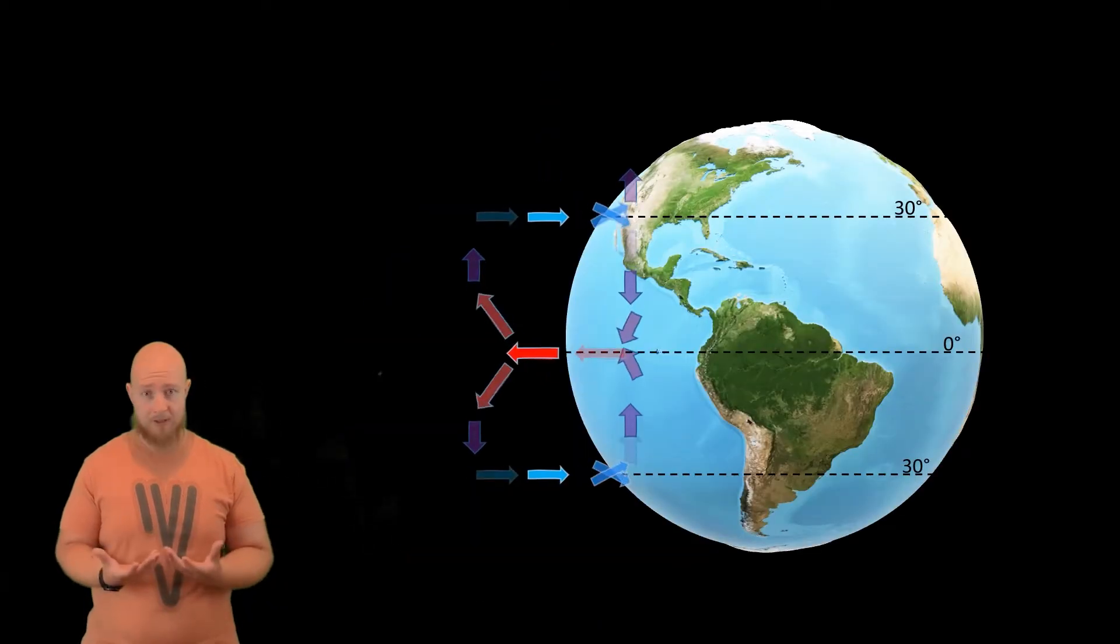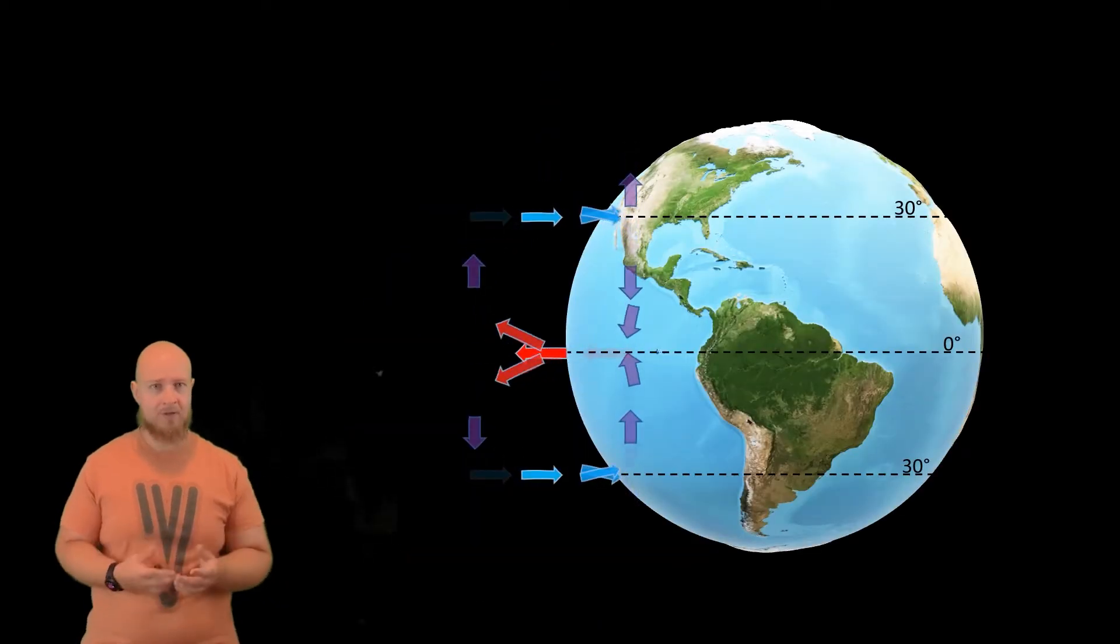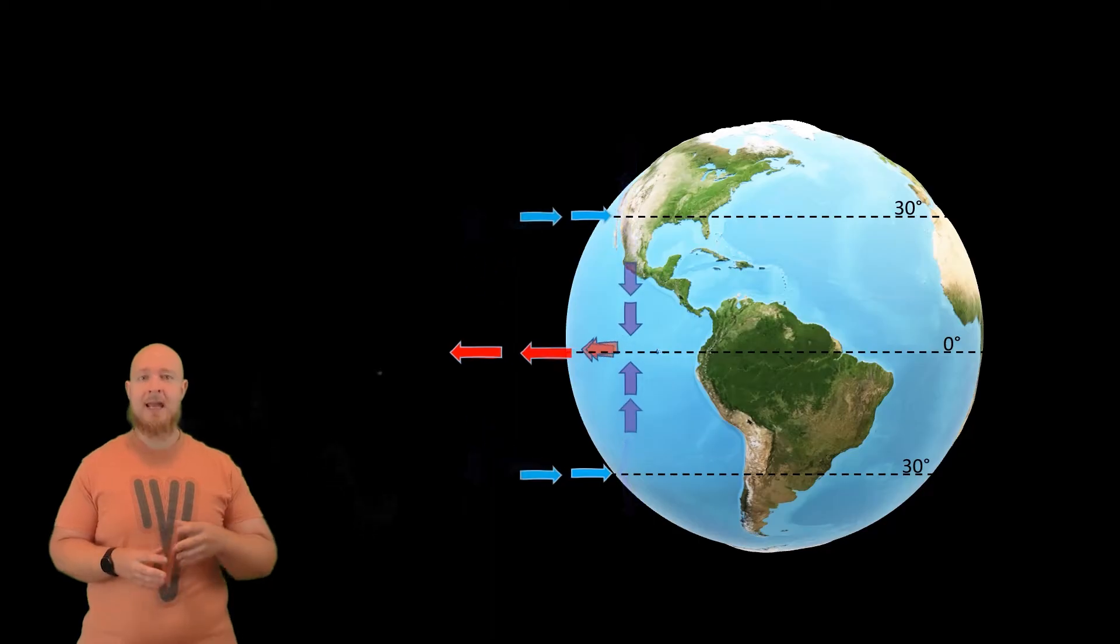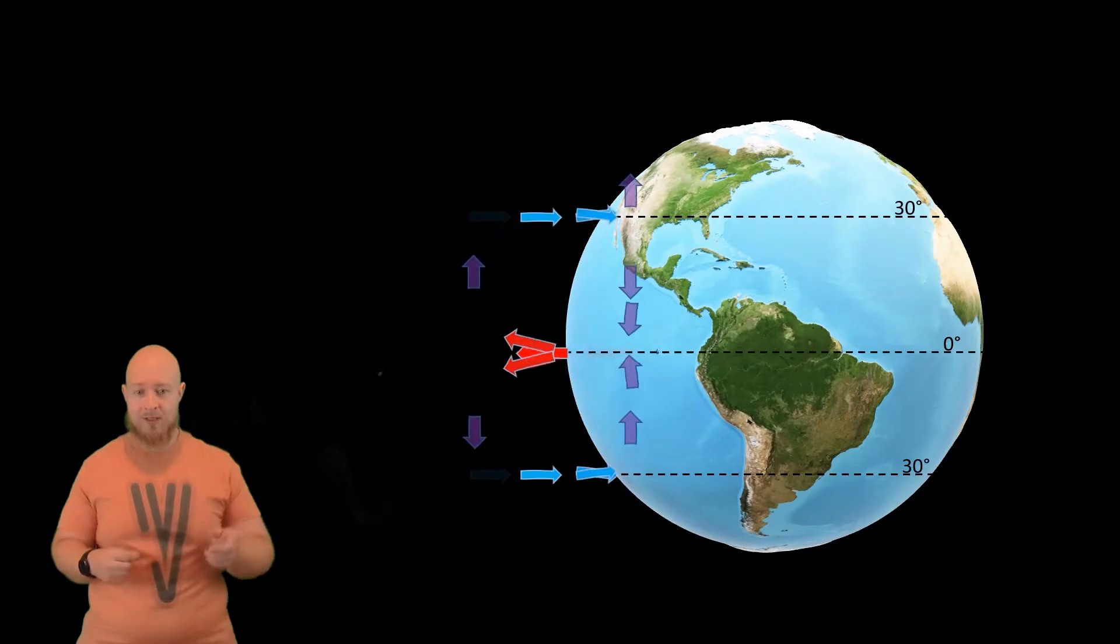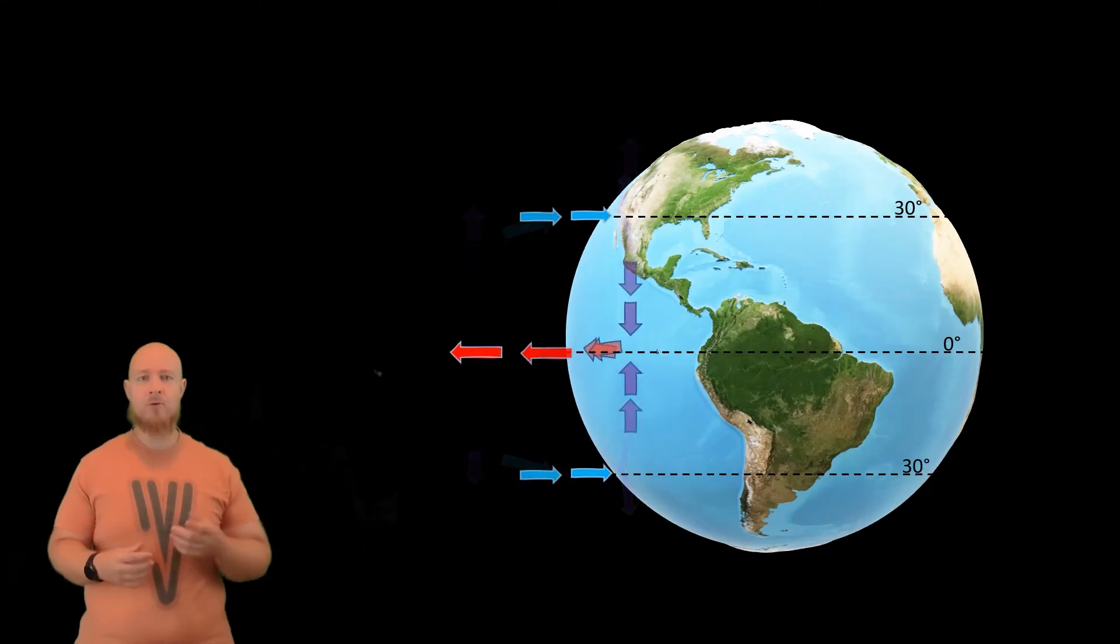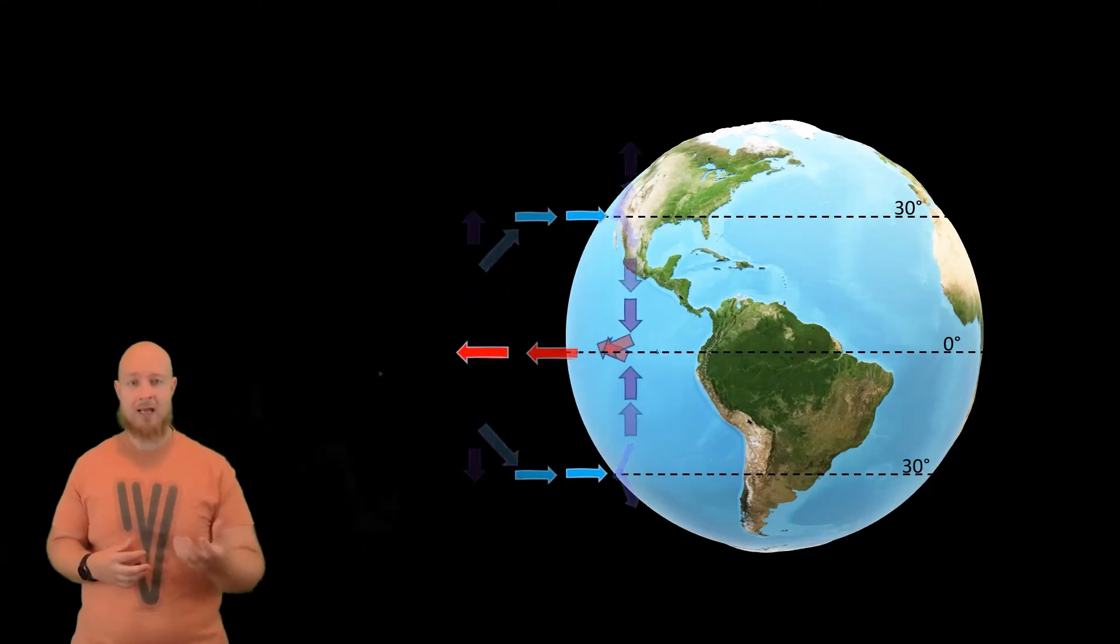As this air is falling, air from the upper atmosphere moves in to take its place. And this sets up the convection cycles we see at the equator, or the circular movement of air due to differences in air temperature and air pressure.